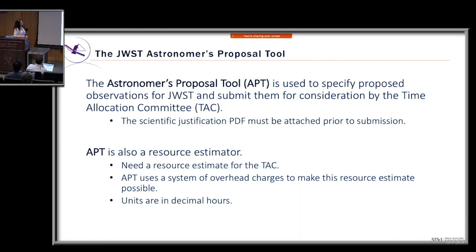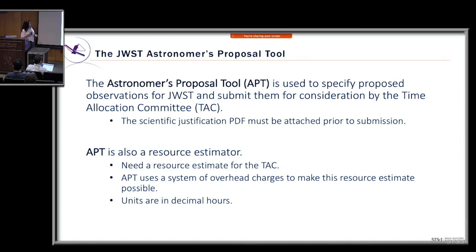APT is also a resource estimator — it estimates the total charge time for a proposal, which the TAC needs during their review. APT uses a system of overhead charges to make this resource estimation possible. The estimated total charge time can be found in the proposal information page, and that time is in units of decimal hours.